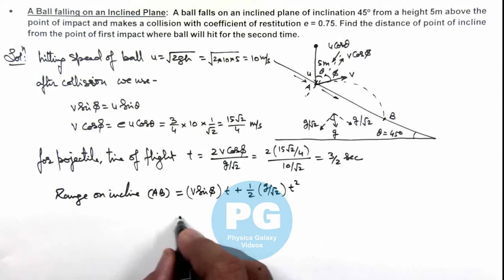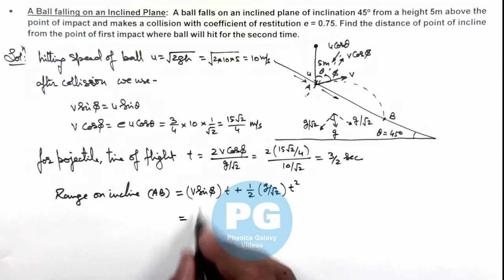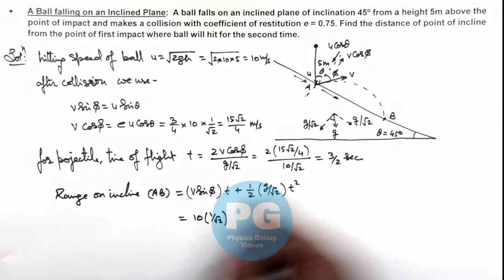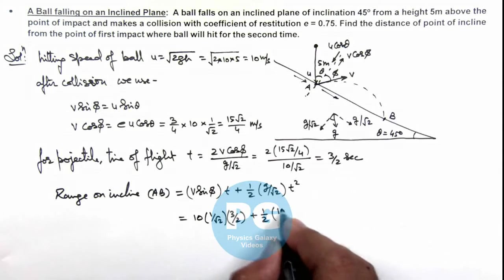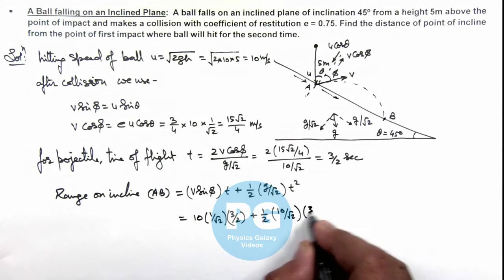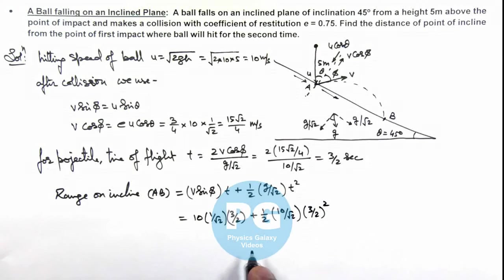On substituting the values, we get 10 × (1/√2) × (3/2) plus half × (10/√2) × (3/2)². On further simplifying, the value we get is 15/√2 plus...